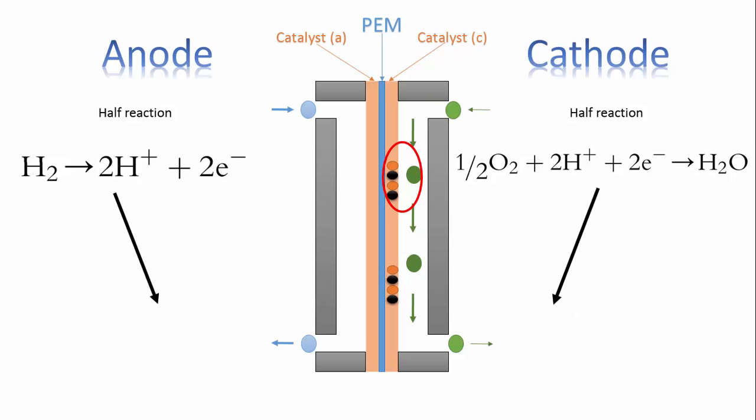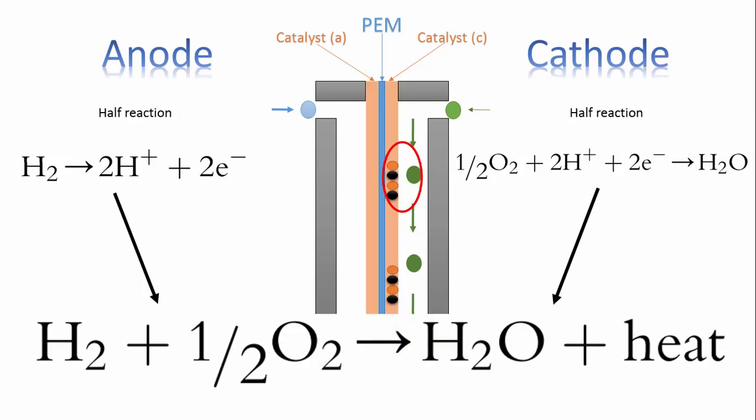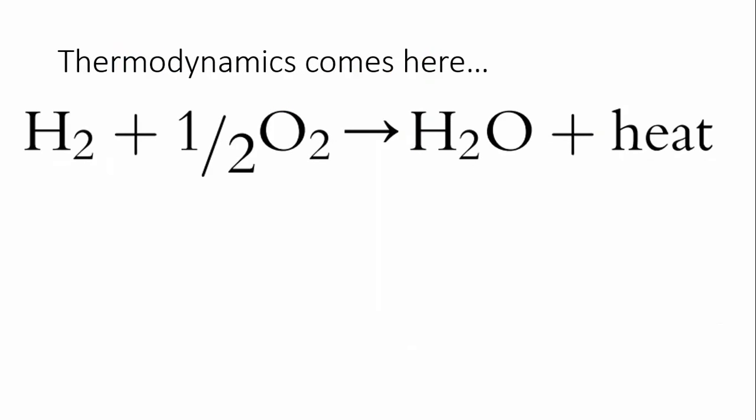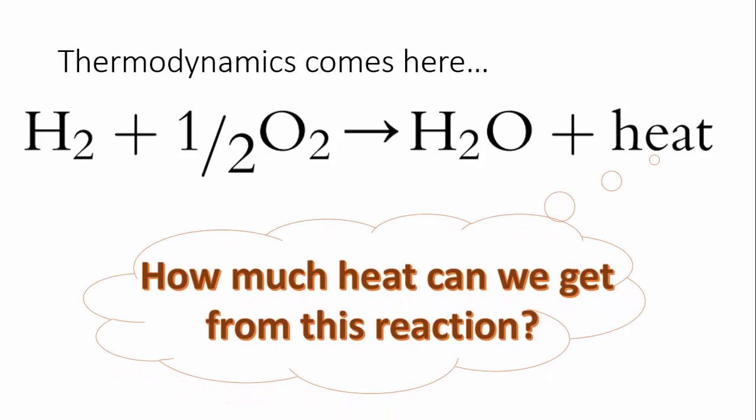Now these two half-reactions give an overall reaction. As the reaction is exothermic, it releases heat. Here comes our thermodynamics: how much heat can we get out of this chemical reaction, or in other words, what is the amount of heat energy released by this reaction? That's the enthalpy of this reaction.